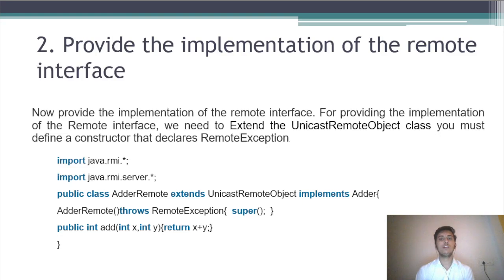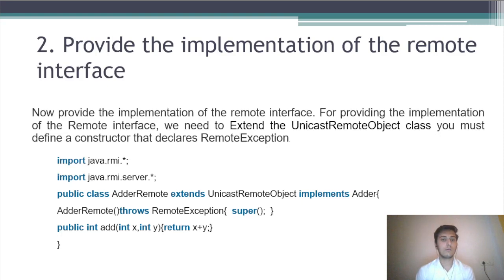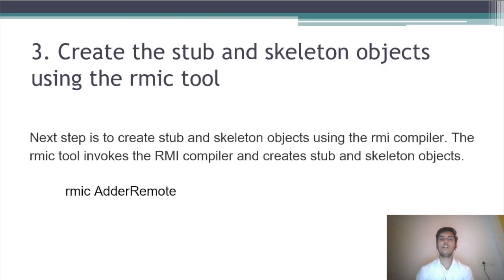Step two: provide the implementation of the remote interface. For providing the implementation of the remote interface, we need to extend the UnicastRemoteObject class. You must define a constructor that declares remote exception. So here is the program — import java.rmi.* and also import java.rmi.server.*; public class AdderRemote extends UnicastRemoteObject implements Adder. This is the constructor used to throw the remote exception, and here we define our add method.